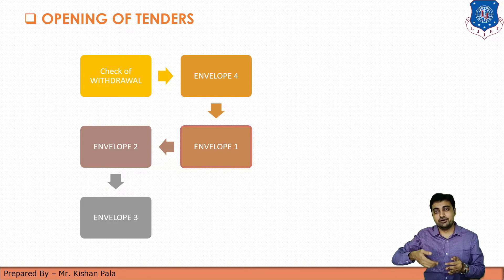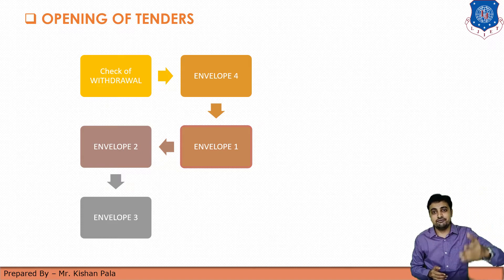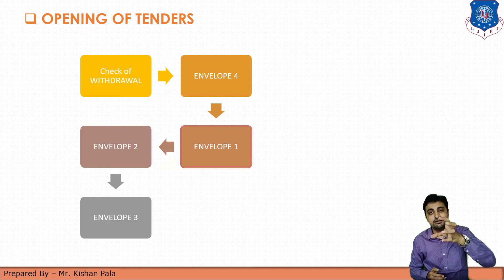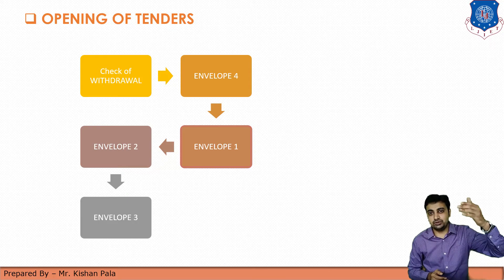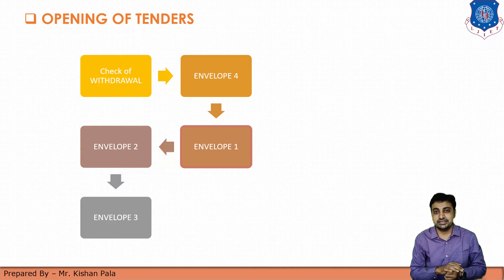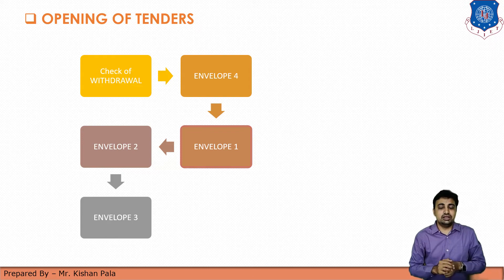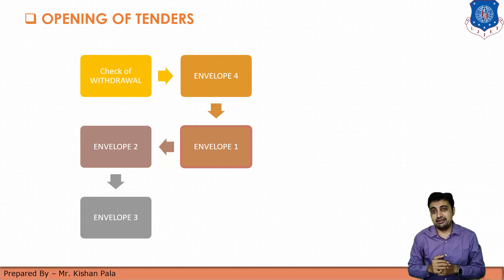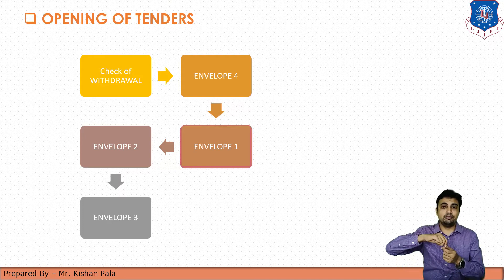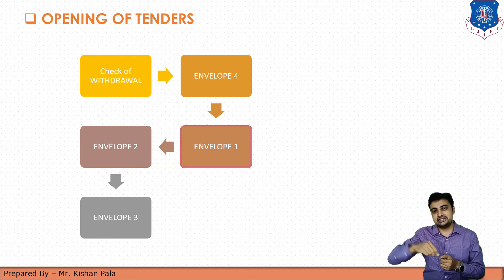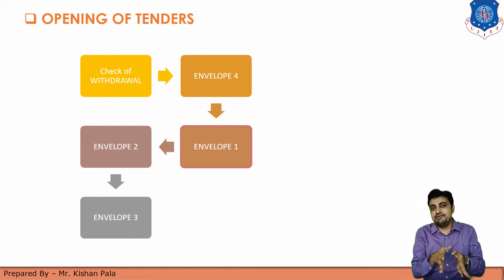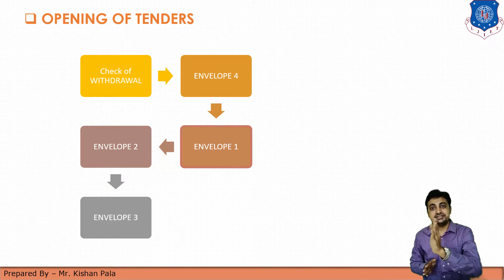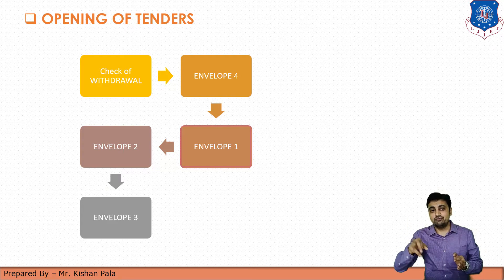After getting the EMD from envelope number 1, you open envelope number 2 and check all the documents regarding the facility, financial capacity, and past experience of that firm — analyzing whether all required documents are present. After opening envelopes 4, 1, and 2, the last step is to open envelope number 3, where the contractor has quoted for the particular type of work with the price tender form. This is the complete procedure for the opening of the tender.